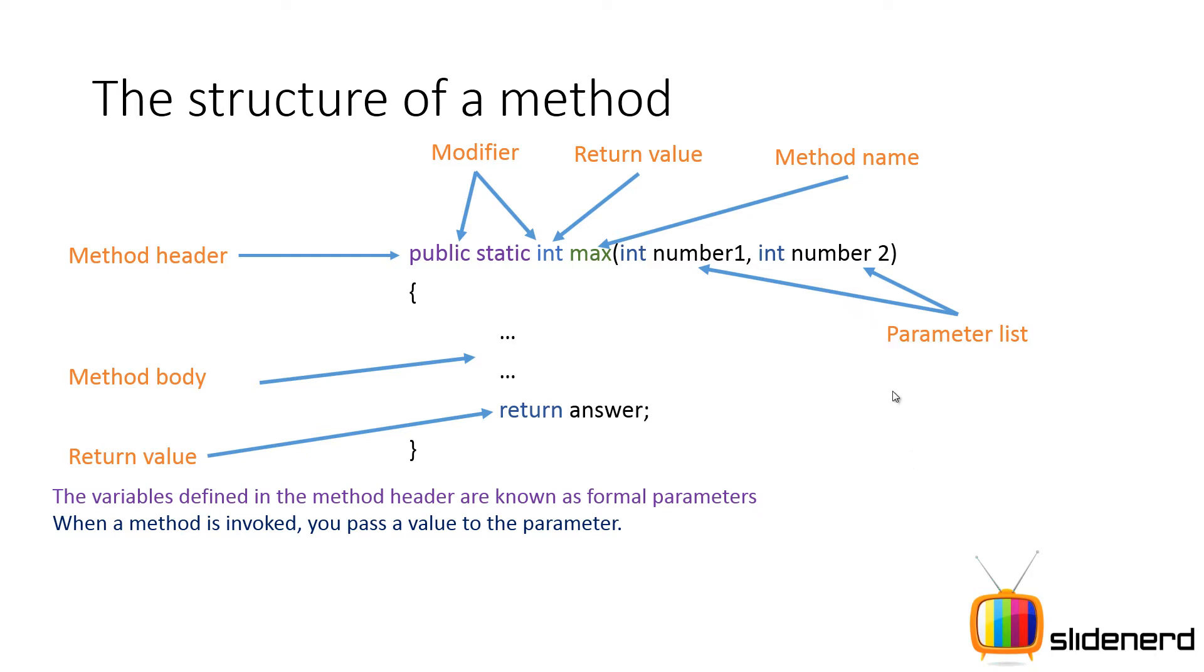Ultimately the parameter list is nothing but the type, the order, and the number of parameters. Now let's discuss each of these little values. Type: well here we have an integer number one, we have an integer number two, so the type does matter. The number of parameters: maybe if there was number three, then that would be different from this method that we have over here.